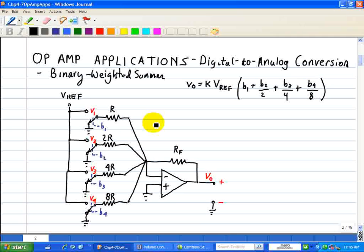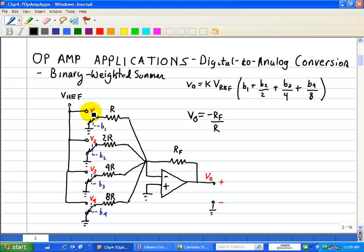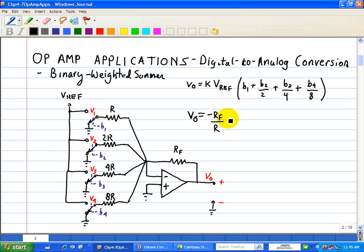So using this configuration, we can write an equation associated with this. And in this case, VO, our output voltage shown here, is equal to negative RF divided by R. And this is where we're going to take a look at V1 input. And so that's our contribution of V1 to the output.